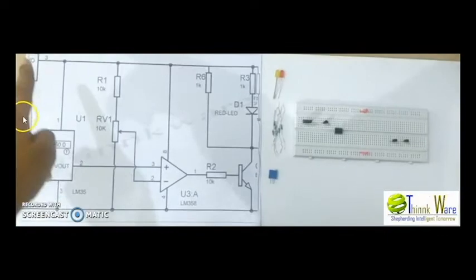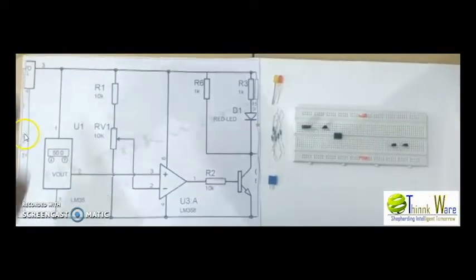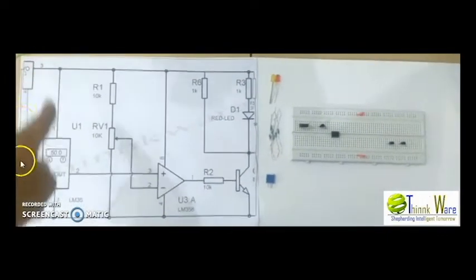Pin 1 of 7805 is connected to the positive terminal of the battery and pin 2 is connected to the negative terminal.